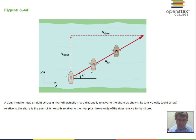It's a vector addition problem. We've got the velocity of the boat plus the velocity of the river. These two are not parallel, the velocity of the boat and the velocity of the river, so we can't add them directly. We have to use our techniques.